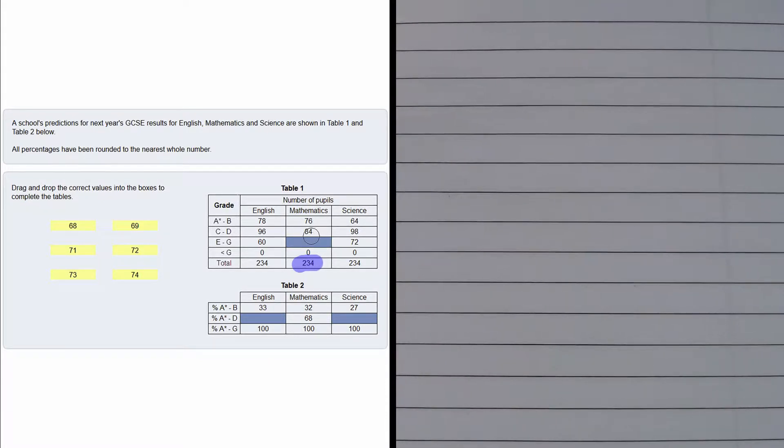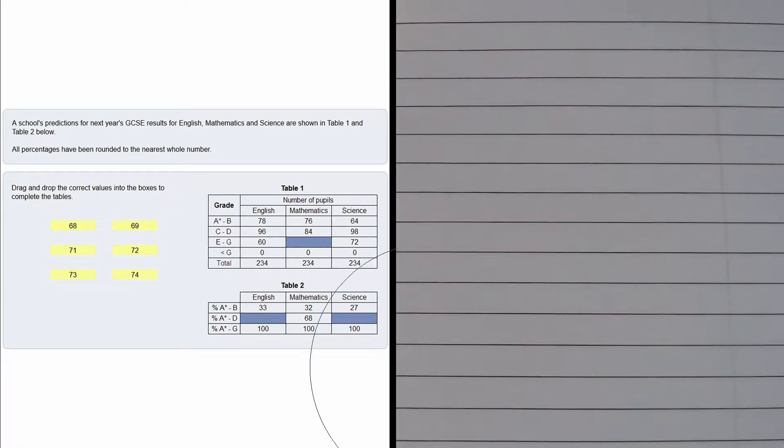We know that 84 got between a C and a D, and 76 got between an A* and a B. So we can deduct 76 and 84 from 234 to get this number.